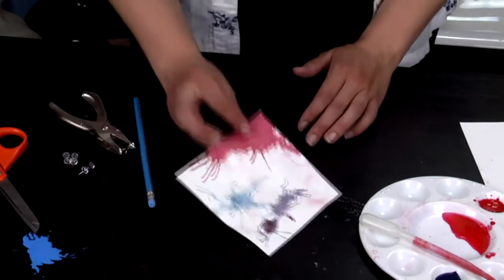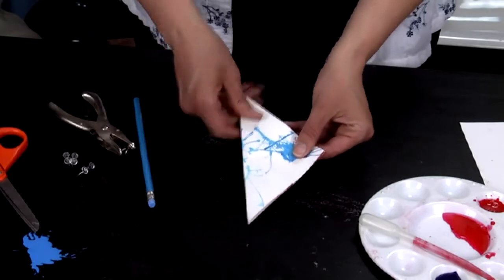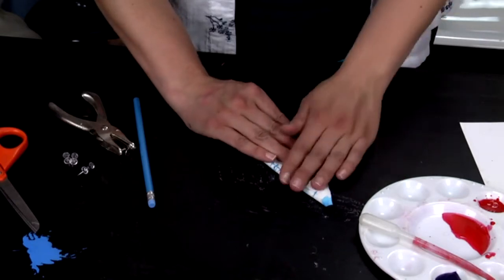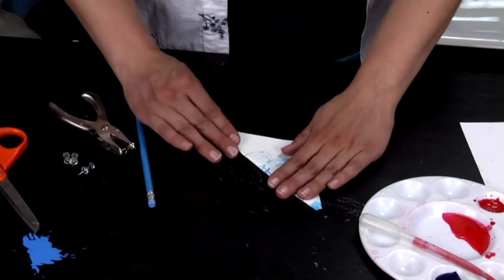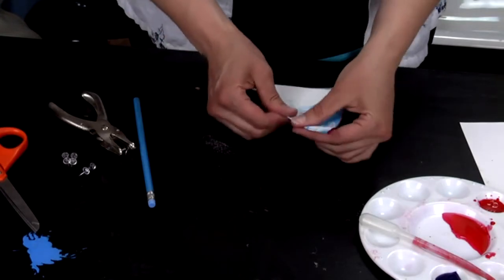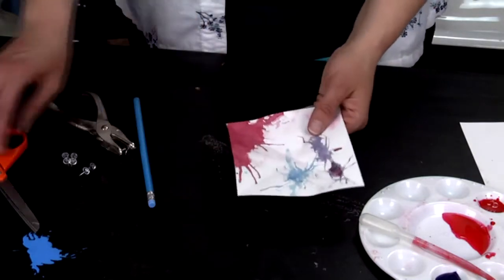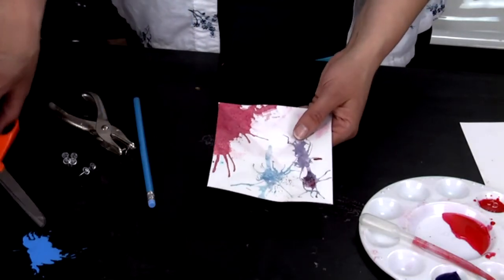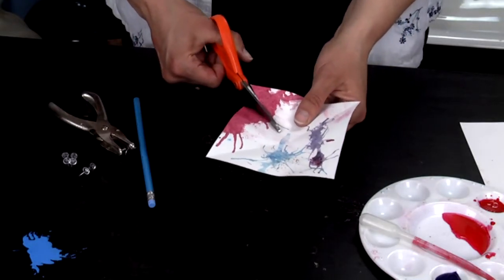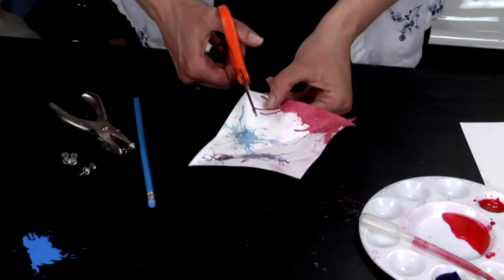Once your paper is dried on both sides, go ahead and fold the triangle, and then open it up into your square. What you're going to do is cut three quarters of the way to the center, not all the way to the center but almost there, down each crease.